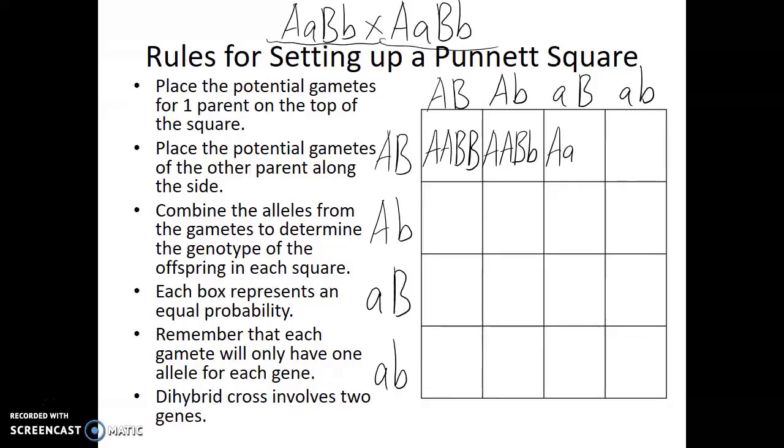And we have capital A, lowercase a, capital B, capital B. Capital A, lowercase a, capital B, lowercase b. These are the genotypes of the potential offspring. Each of these gametes from the first parent being combined with a capital A, capital B gamete from the second parent.